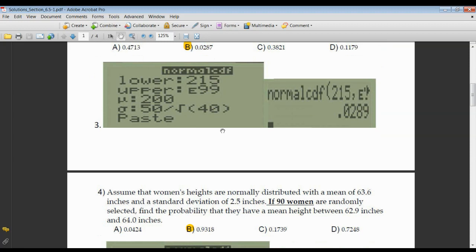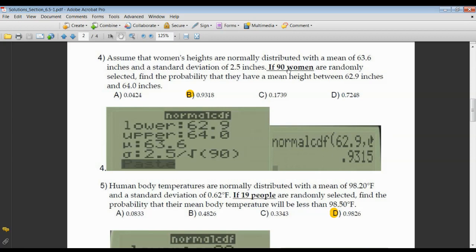Number four, we're talking about women's heights. 90 women in particular. Find the probability that their mean height, the mean height of these 90 women falls between 62.9 and 64 inches. There's your lower and upper limit. The mean is given to you as 63.6. Standard deviation now becomes the original standard deviation of 2.5 divided by n. In this case, it's 90. It's actually bolded out for you, so it's easy to recognize.